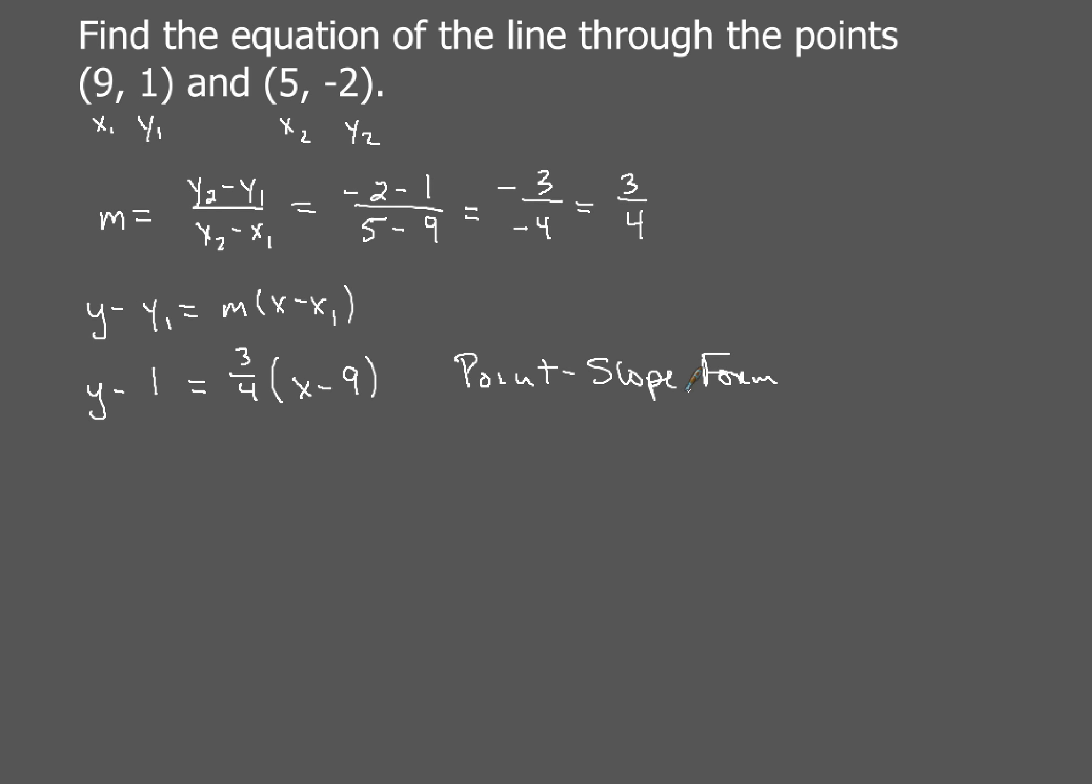However, if they wanted you to continue on and put it in slope intercept form, which is y equals mx plus b, then what you would need to do is go ahead and solve that for y. So if you do that, now I don't like fractions, so I would get rid of the 4 by multiplying everything by 4.